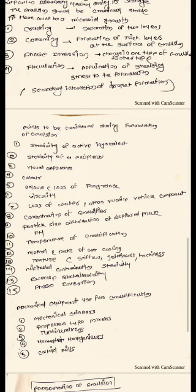Now talking about the points to be considered during formulation of emulsion: the stability of the active agent and stability of excipients are important, along with visual appearance, color, odor, whether it has lost fragrance or not, its viscosity, loss of water or volatile components, contamination of emulsifier, particle size distribution of the dispersed phase, pH, temperature of emulsification, method, rate of cooling, and texture — whether the emulsion has stiffness, retchiness, or tackiness. These all play a very important role.